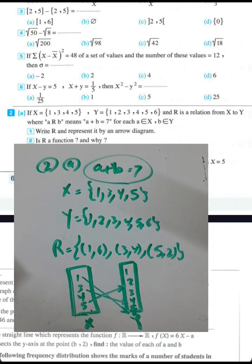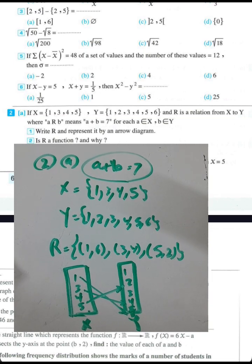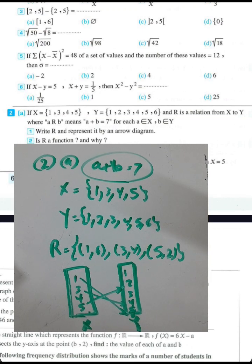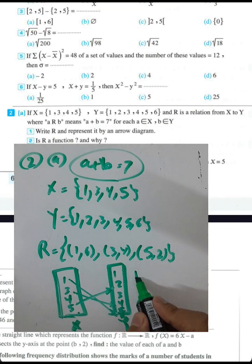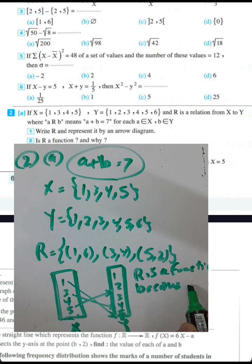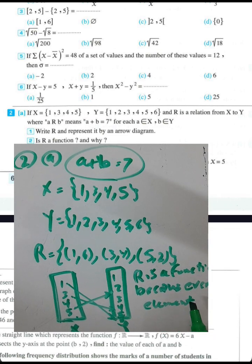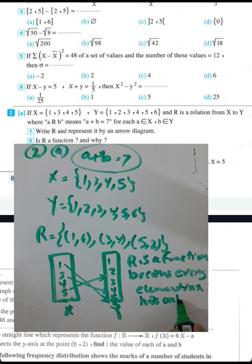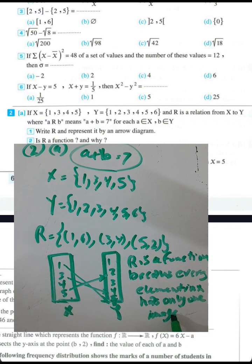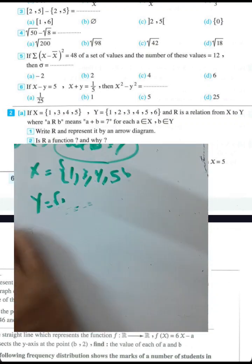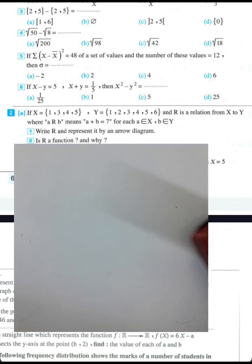R is a function because every element in x has only one image in y.